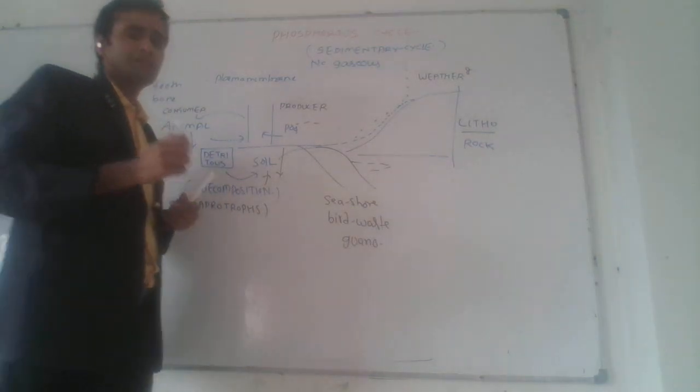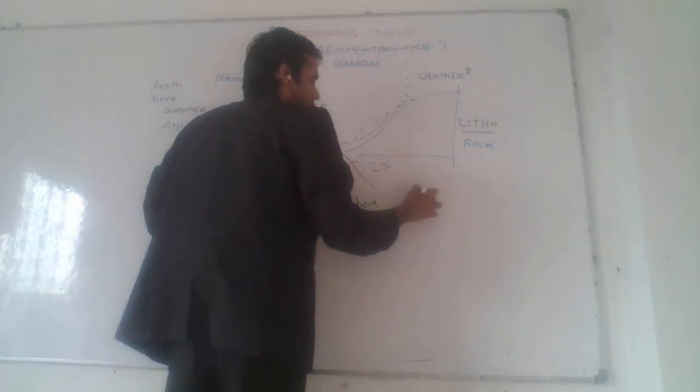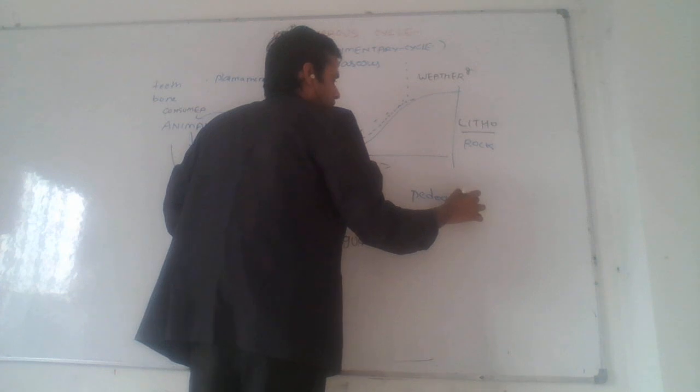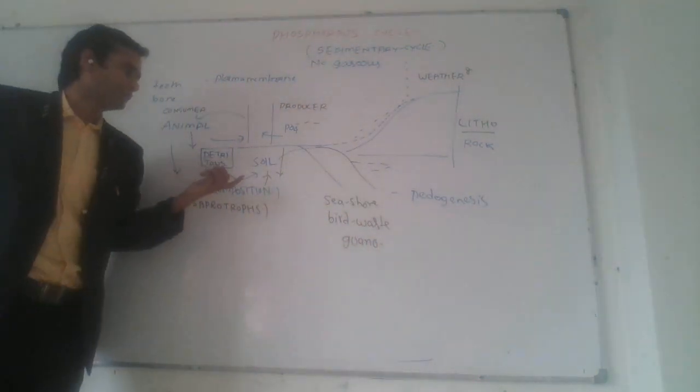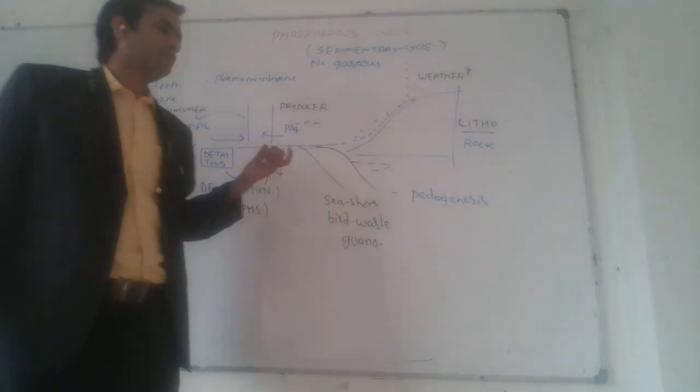This is the formation of soil, which is pedogenesis. It takes approximately 1000 years, so soil is a most costly resource.